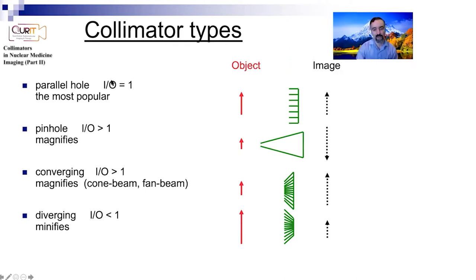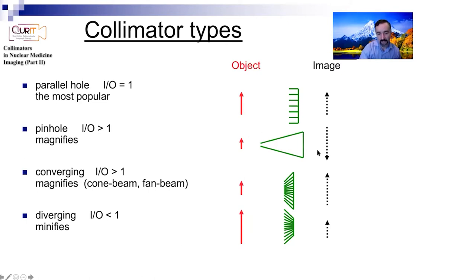When we have different kinds of collimators, the magnification changes. The ratio of image to object is preserved in a parallel hole collimator. But when you have a pinhole collimator, you get a magnification of the image to the object by more than one - and that's also the case for a converging collimator. The difference is that in a pinhole collimator, you get a flip as well, so the image is inverted. And in diverging, of course, you're minifying the image, not magnifying it.